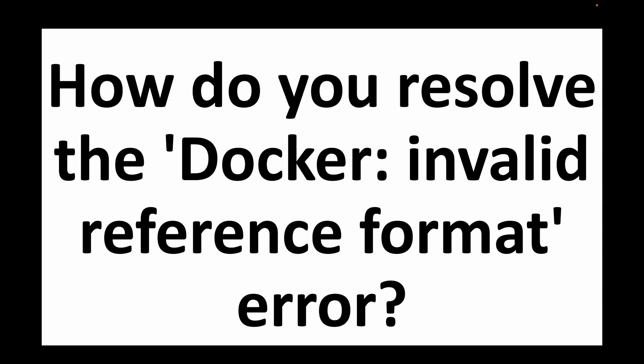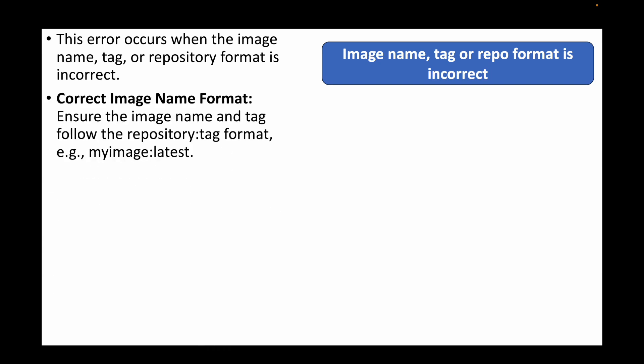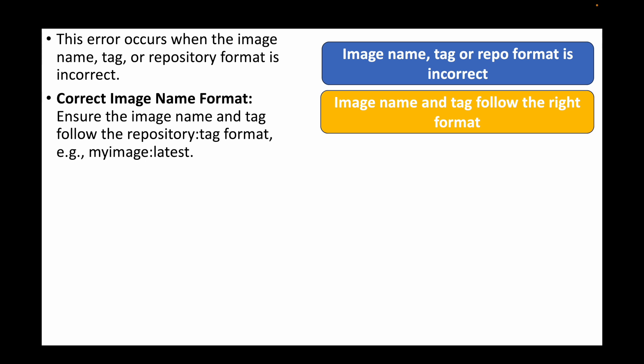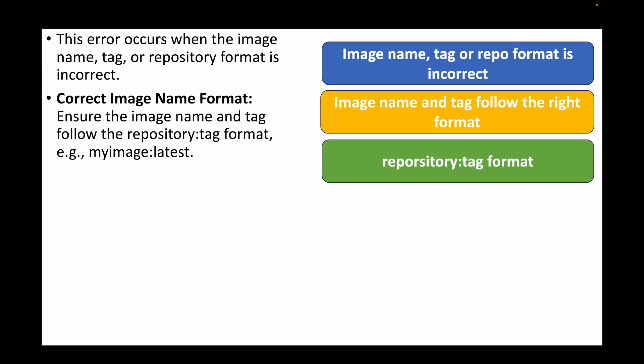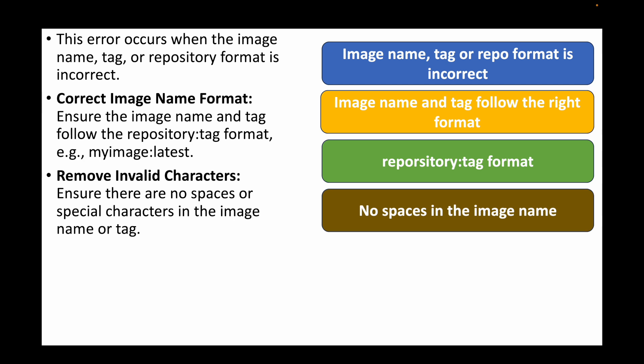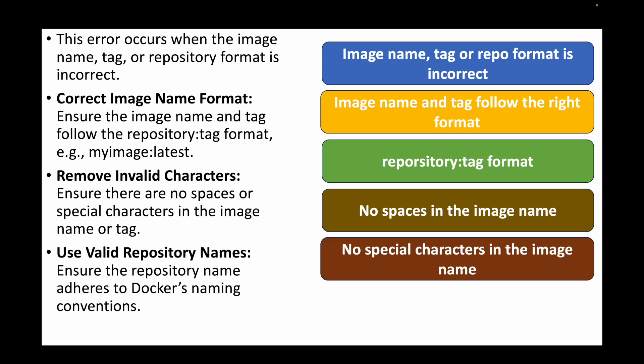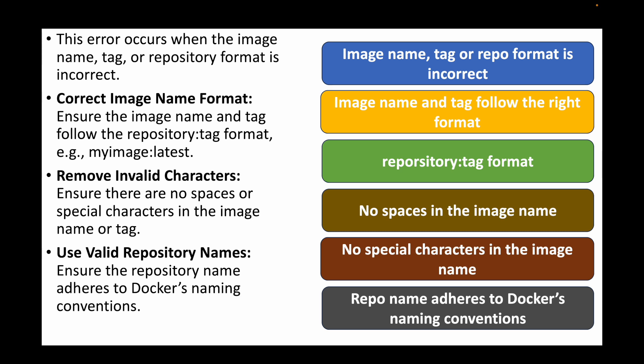The next question is: how to resolve the 'Docker invalid reference format' error? This error generally occurs when the image name, tag, or repository format is incorrect. Ensure the image name and tag follow the correct format, such as `repository:tag` — for example `apache:latest`. Remove any invalid characters like spaces or special characters from the image name, and make sure the repository name adheres to Docker's naming conventions.